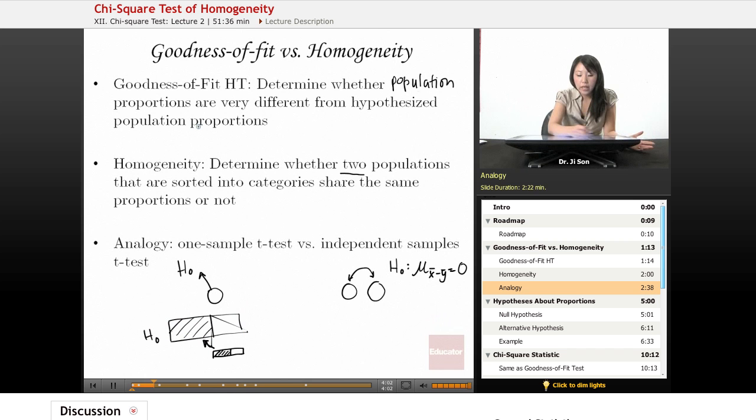In our test of homogeneity, we have two samples, two populations, two samples that come from two unknown populations. And we want to know whether these have similar proportions to each other. And so that's going to be our null hypothesis, that these have the same proportions or have different ones.